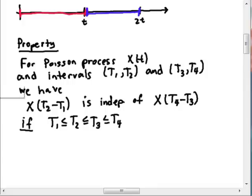And because of this property now, we can see that in the above example that we talked about, the interval from 0 to t and we talked about the interval from t to 2t. These four times, 0 is less than or equal to t, t is less than or equal to t, and t is less than or equal to 2t, these two intervals are non-overlapping.